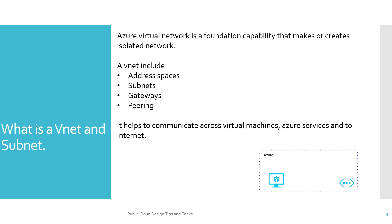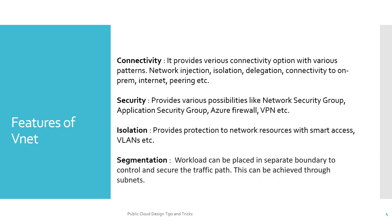It helps to communicate across virtual machines, Azure services, and to the internet — providing connectivity between virtual machines, pass-to-pass connectivity, and then from Azure to internet. These are the main features of a virtual network.